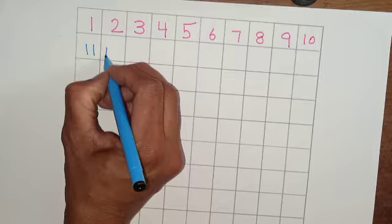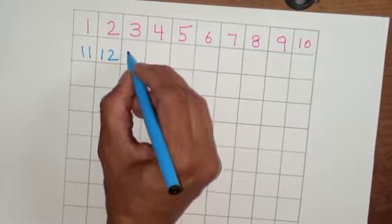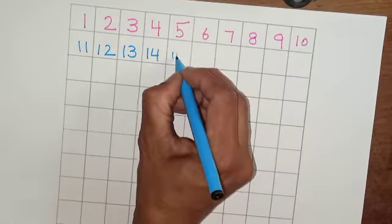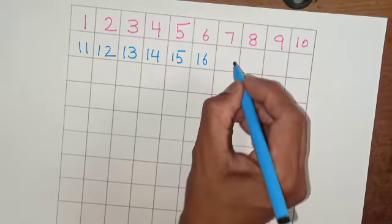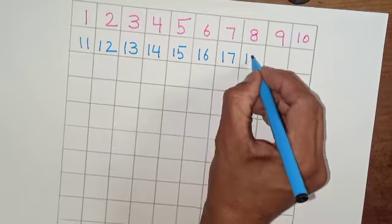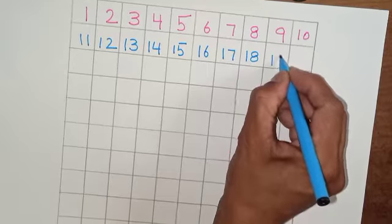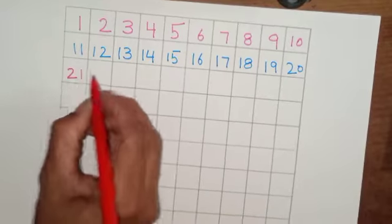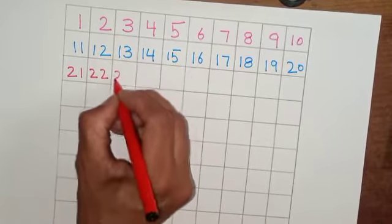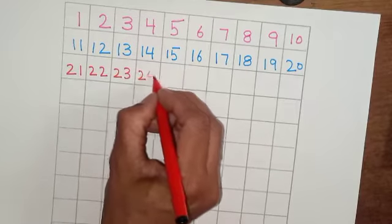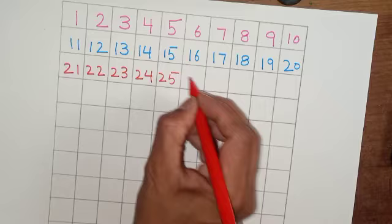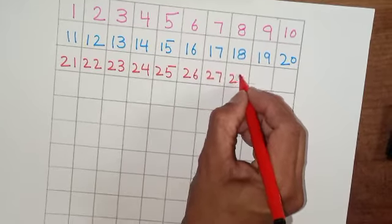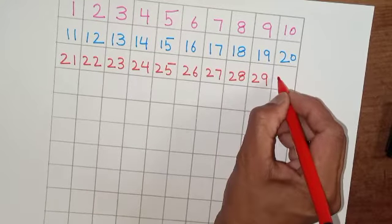11, 12, 13, 14, 15, 16, 17, 18, 19, 20, 21, 22, 23, 24, 25, 26, 27, 28, 29, 30.